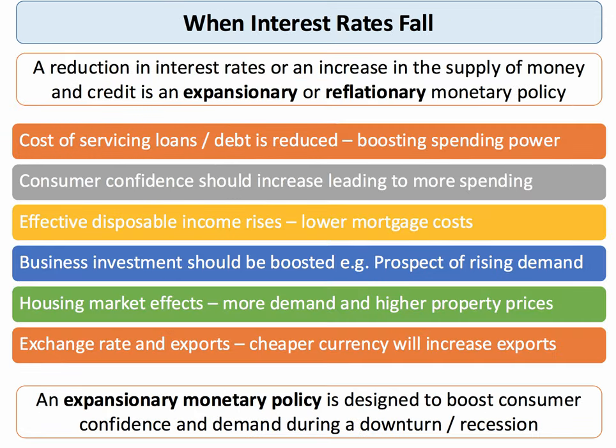When interest rates go down, this is an example of expansionary monetary policy — the central bank is trying to reflate the economy, expand confidence and demand, perhaps because the economy is in a slump or there's a risk of deflation. When interest rates fall, the cost of servicing loans goes down. Consumer confidence should improve. People with mortgages get more effective disposable income because their monthly mortgage bill is cheaper. Businesses might invest more due to cheaper borrowing. A cheaper interest rate should stimulate the housing market. And the exchange rate, in theory, will fall because lower interest rates cause an outflow of hot money from the currency markets, causing a depreciation.